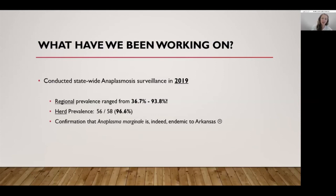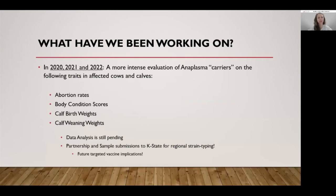The research we've been working on the last couple of years, continuing into 2022, is a more intense evaluation of Anaplasma carriers — looking at carrier animals and determining whether they have an increased rate of abortion, what their body condition scores are before and after calving, what their calf birth weights are, and calf weaning weights. We know that calves born to carrier cows can actually be born infected with Anaplasma marginale, so we're interested in whether we see a difference in birth weight and weaning weight as a result. Data analysis is still pending.